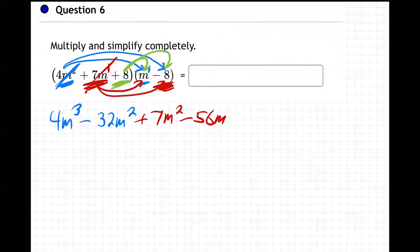So plus 8 times m is plus 8m, and plus 8 times minus 8 is minus 64. Okay, so now we are done with the multiplying. We multiplied it out completely.